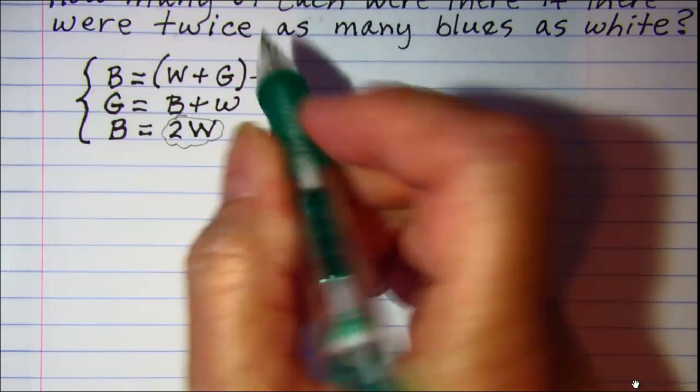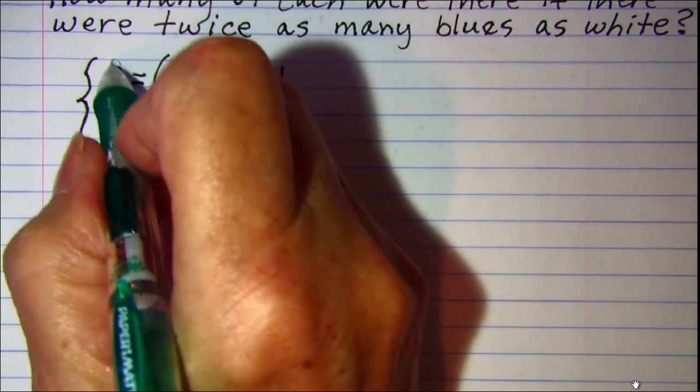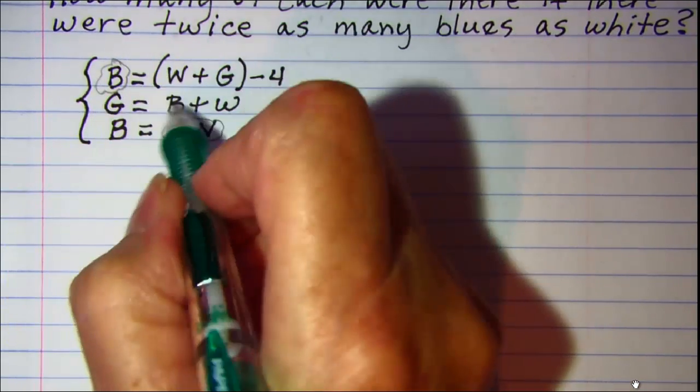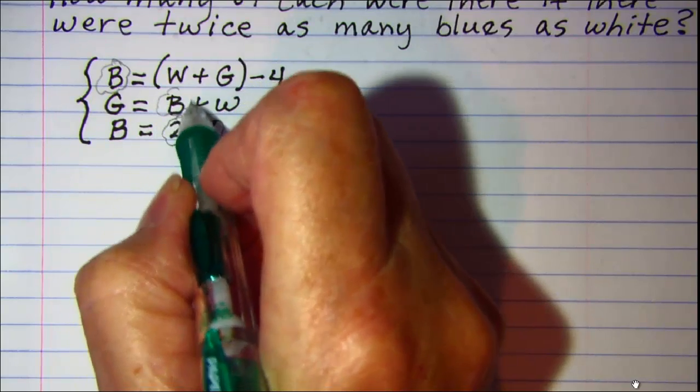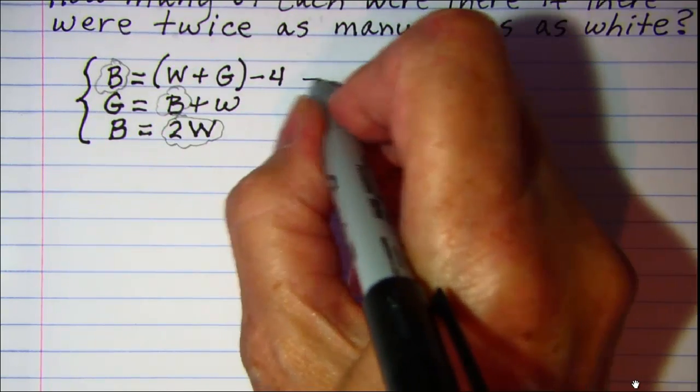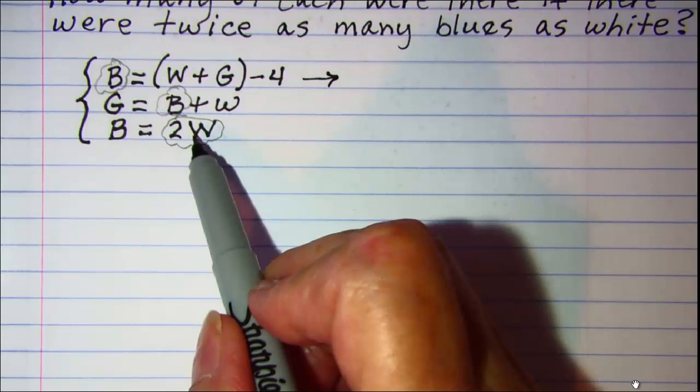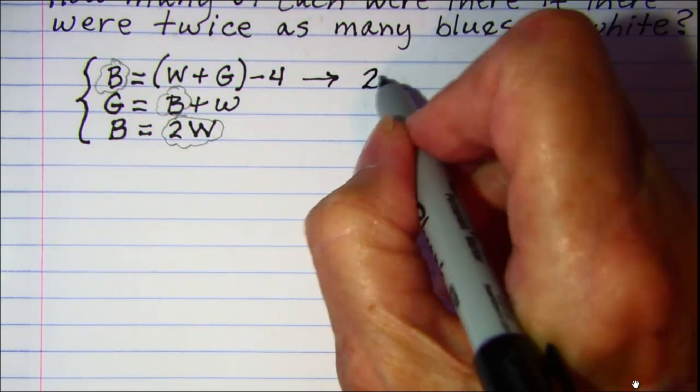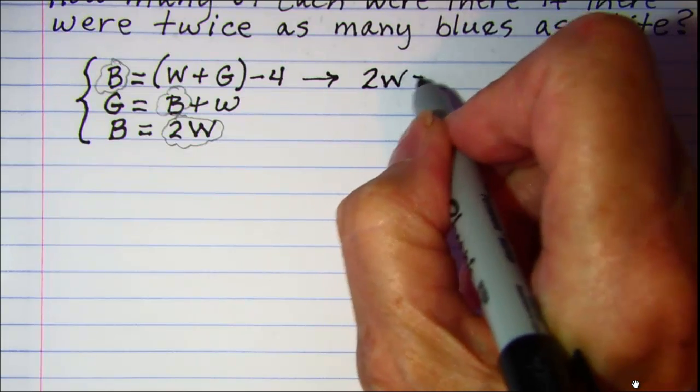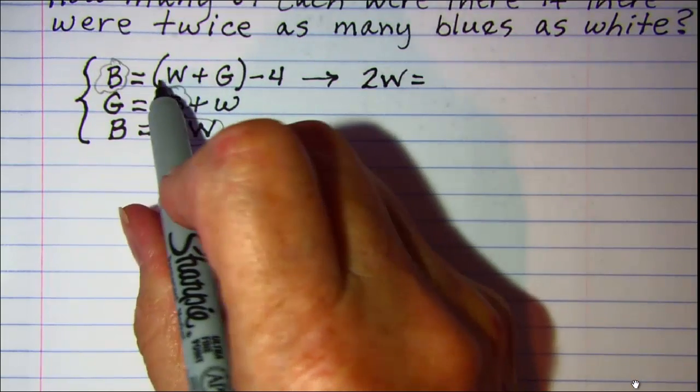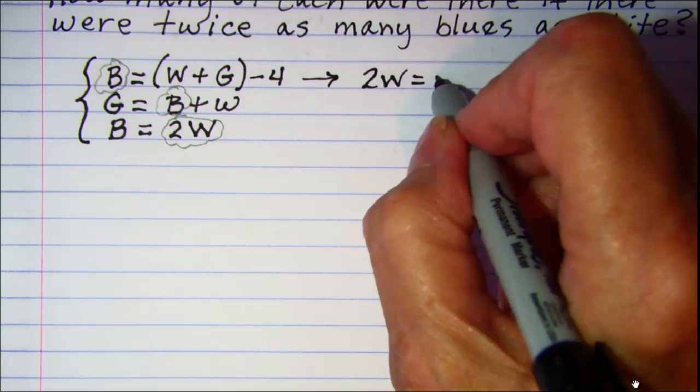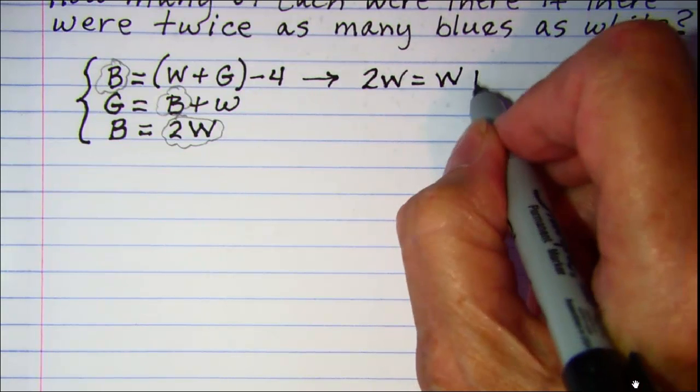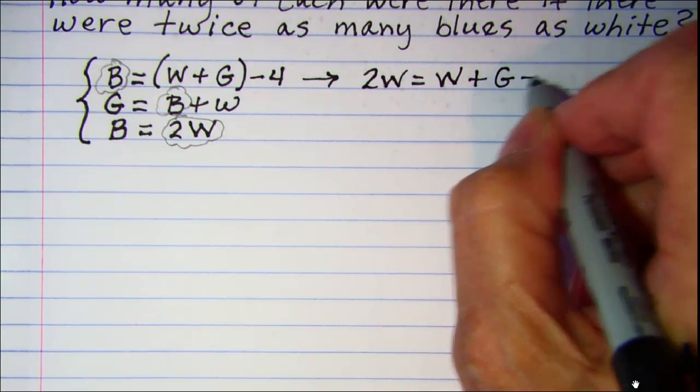We'll put 2W into all of the places where I see a B. So this equation then becomes, put my 2W in for B. So 2W equals, and I don't really need these parentheses, so I'll remove those,